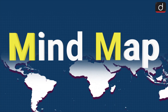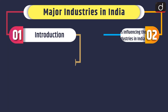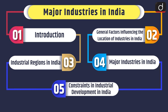Hello and welcome to another episode of Mind Map. Today's topic of discussion is major industries in India. We will discuss the introduction of the topic, general factors influencing the location of industries in India, industrial regions in India, major industries in India, and constraints in industrial development in India.